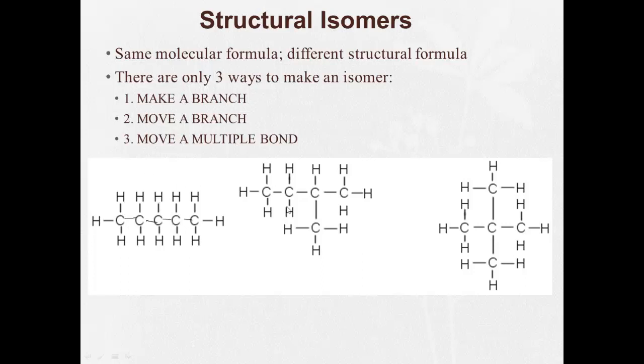And these all look very different. But let's see, how many carbons does each of them have? 1, 2, 3, 4, 5 carbons, so C5. Counting the hydrogens: 1, 2, 3, 4, 5, 10, 11, 12. H12.